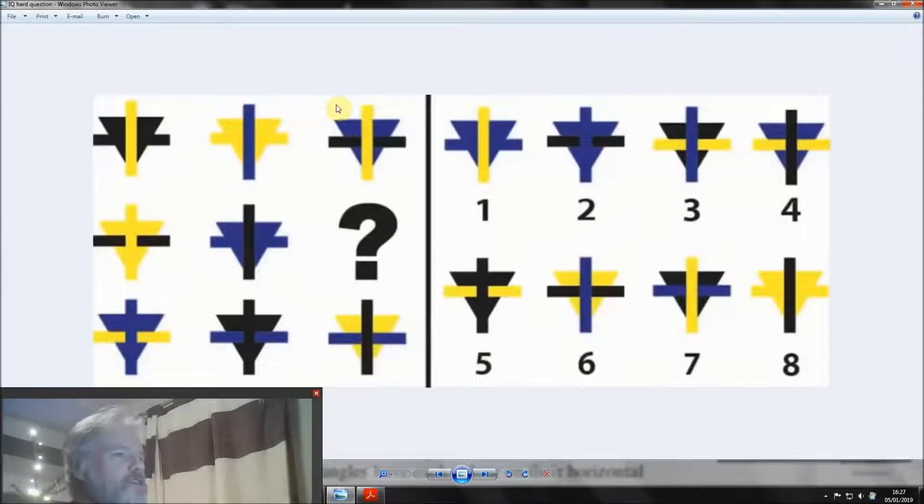So first of all, let's look what we've got. We've got three blues here and we've got three yellows, so we'll see how they correspond with the horizontal bars. And we'll also look if there's any reference across the way, and there isn't.